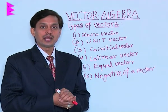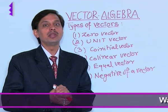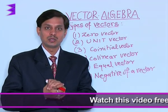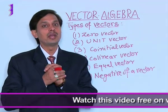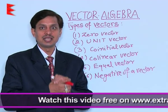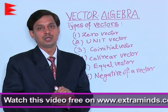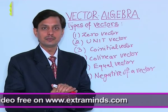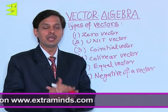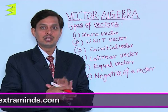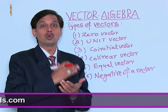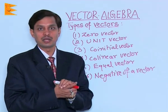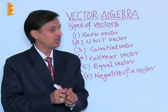After explaining what a vector quantity is — having both magnitude and direction — I want to tell you what is a position vector. If a vector starts with A and ends with B, then location B minus location A is known as the position vector, written as AB.